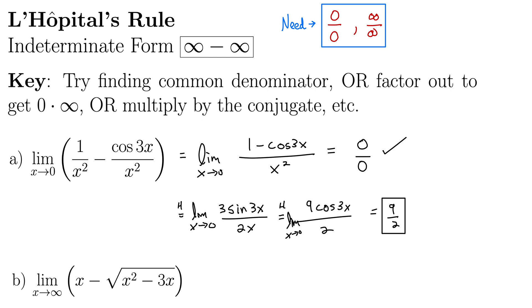For part b we have the limit as x goes to infinity of the quantity x minus square root of the quantity x squared minus 3x. If we just let x run out to infinity, we again get infinity minus infinity, which is an indeterminate form and not of the kind we can plug into L'Hôpital's rule.